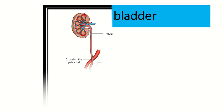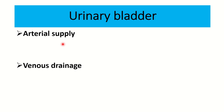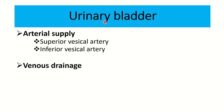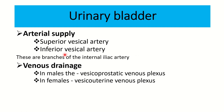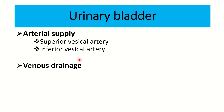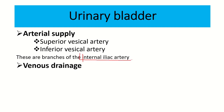The arterial supply of the urinary bladder is from the superior vesical artery and inferior vesical artery. The superior vesical artery supplies the upper part of the urinary bladder, and the inferior vesical artery supplies the lower part. Both the superior and inferior vesical arteries are derived from the internal iliac artery, which itself is a branch of the common iliac artery.